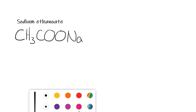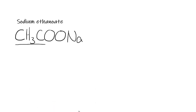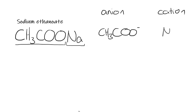So for this one here, we just need to recognize that this is an ethanoate ion, and then we've got a sodium ion there. So the anion is CH3COO-, and the cation is Na+.